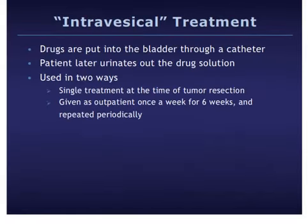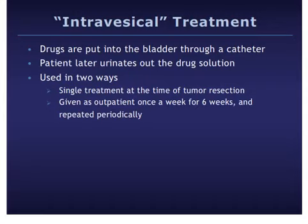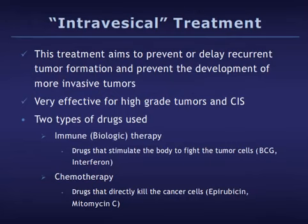In some cases — such as with carcinoma in situ, high-grade superficial tumors, or tumors that keep recurring — additional treatment is required. Most commonly, this involves the placement of drugs into the bladder through a tube called a catheter. After the drug solution is put in, it is kept there for a period of time, then the patient urinates it out. Sometimes this is done right at the time of tumor resection; in other cases it is done several weeks after resection and is repeated once weekly for six weeks, and perhaps periodically after that. This treatment aims to prevent or delay tumor recurrence and prevent the development of more invasive tumors. It is very effective for high-grade tumors and CIS.